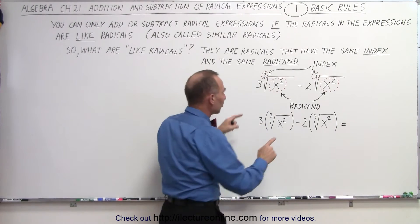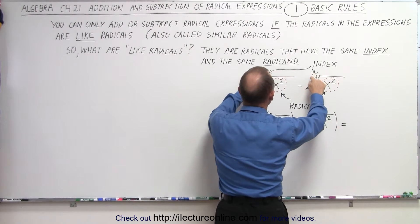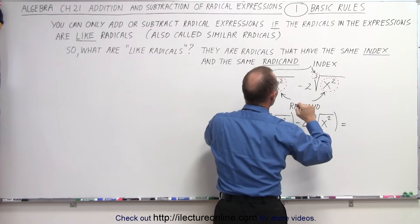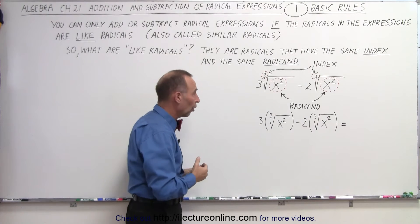So if those are the same, for example, we have an x squared and x squared here. So the radicands are the same, and it's a cube root and a cube root. So the index is the same. Then you can either add or subtract, so it's legal to do so.